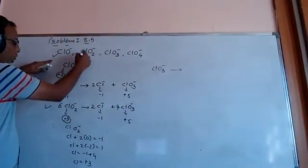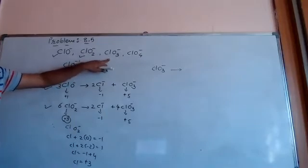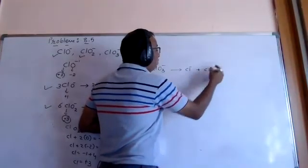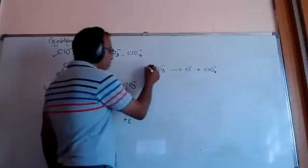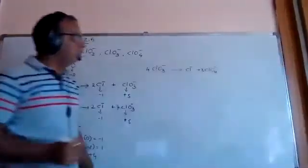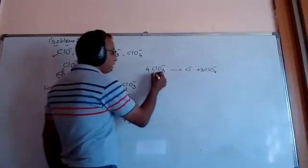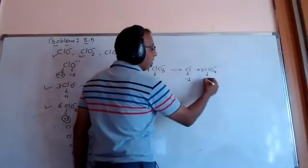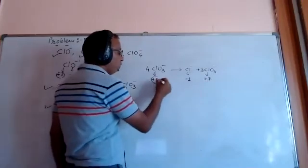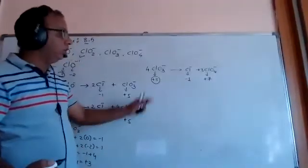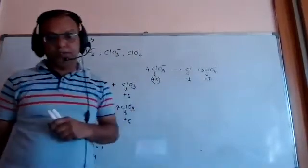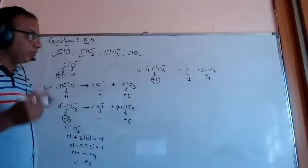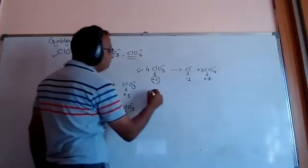The third species is ClO₃⁻. When ClO₃⁻ disproportionates, it gives ClO₄⁻ and Cl⁻. The oxidation number of chlorine in ClO₃⁻ is plus five. It goes from plus five to minus one, which is reduction, and from plus five to plus seven, which is oxidation. Therefore, ClO₃⁻ also undergoes disproportionation.